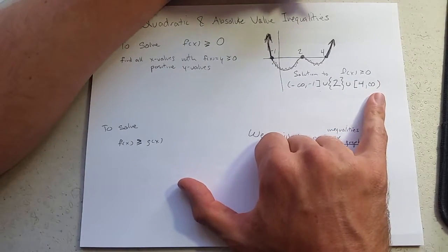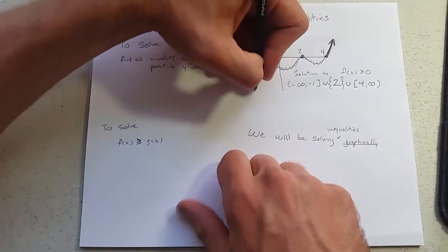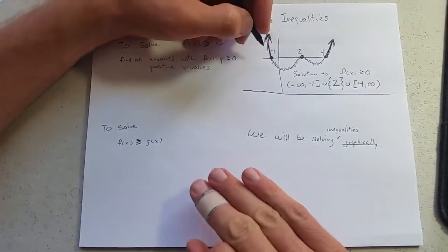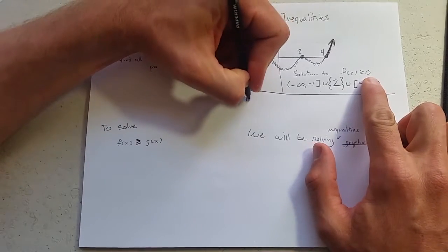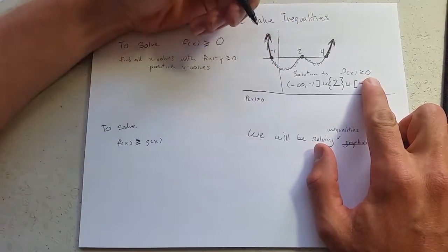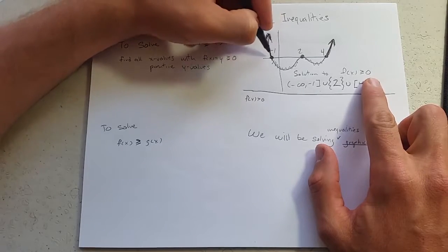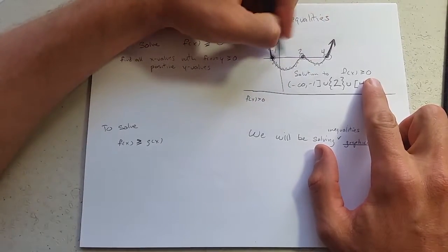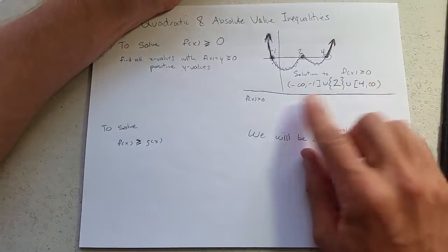So this is a solution to f of x greater than or equal to 0. Now if we had a slightly different problem, if it was f of x is greater than 0, how would it change? The only thing that would happen is we would have to cut out these three x values. What would that look like?